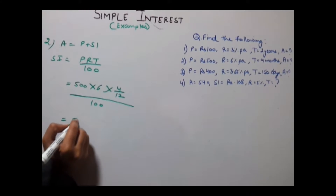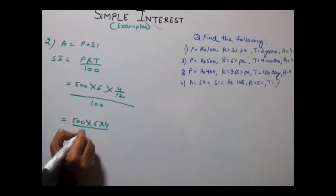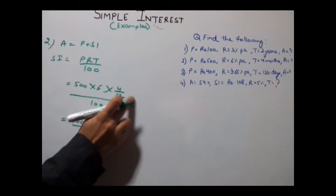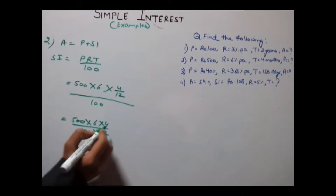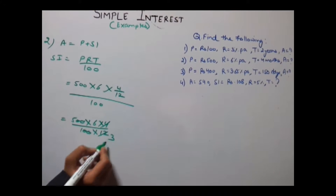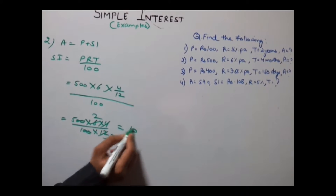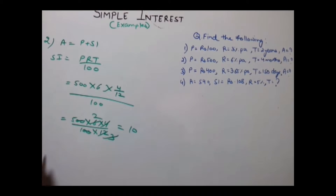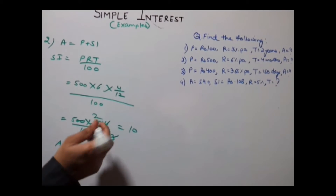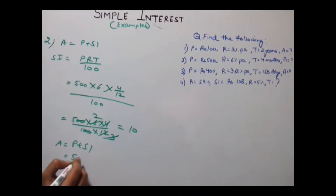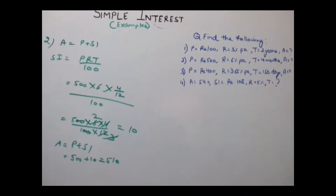As a result you get 500 × 6 × 4 divided by 100 × 12, because 12 is in the denominator. Cancel the two zeros. 4 × 3 gives 12, 3 × 2 gives 6, and 5 × 2 is 10, so our SI is 10. Our final amount is principal plus SI: 500 + 10 = 510.